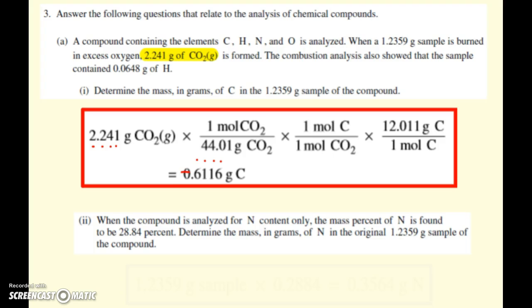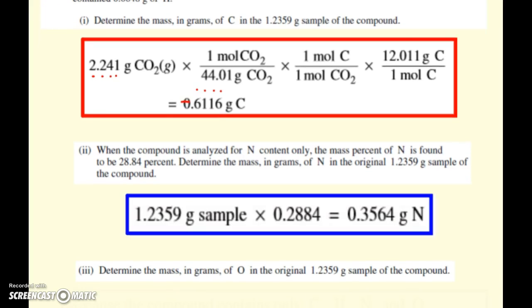Now it says, when the compound is analyzed for nitrogen content only, the mass percent of nitrogen is found to be 28.84%. Determine the mass in grams of the nitrogen in the original 1.2359 gram sample of the compound. And hopefully you're thinking to yourself, is it really that easy? I just take the mass times the percent. Ding, ding, ding. Winner, winner. Chicken dinner. You have how much of your sample you have, multiply by the percent, and there you have the grams of nitrogen in the compound.